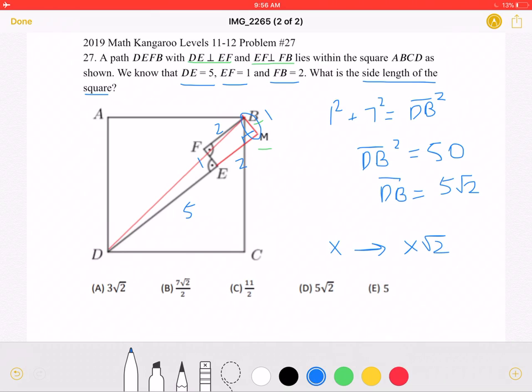So in this case, if we have a diagonal of 5 square root of 2, we know that the x, the side length, must be equal to 5.